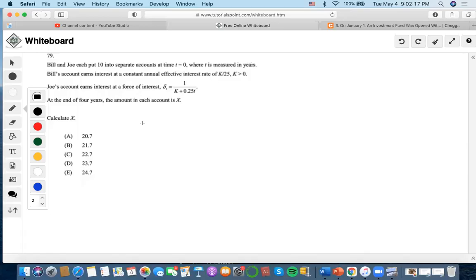This problem is about Bill and Joe who each put $10 into their severance accounts. Bill earns interest at a constant annual rate of K/25, and Joe earns at a force of interest of 1/(K + 0.25T).